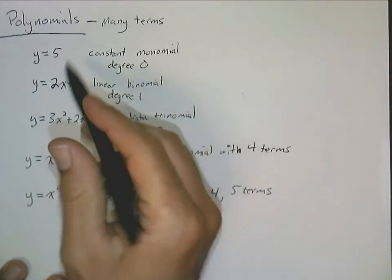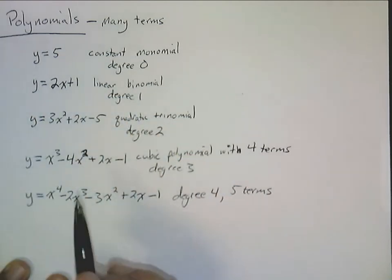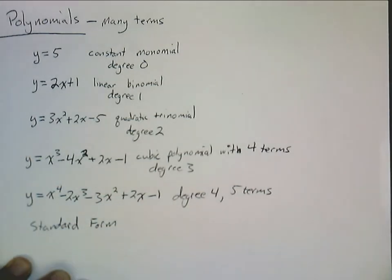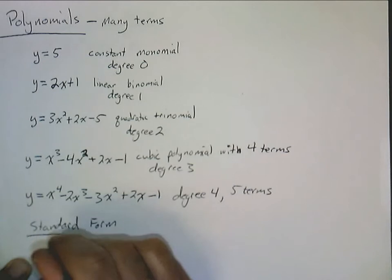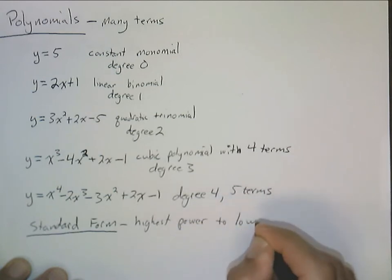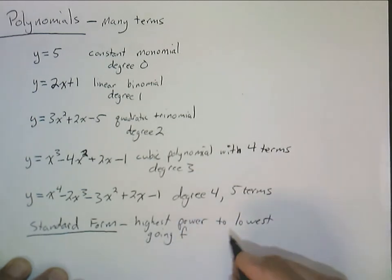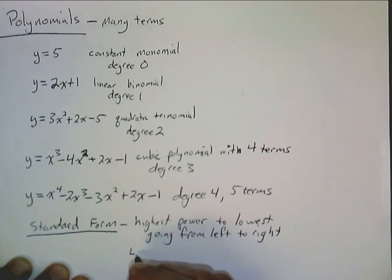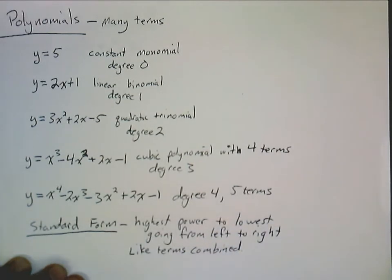Now, you'll also notice how we wrote these things. Basically, these are all in what's called standard form. And standard form for a polynomial, all that really means is that we're going from the highest power of x down to the lowest power of x from left to right. So it's the highest power of x going down to the lowest power of x going from left to right. Also, notice that we don't have any like terms to combine here. Standard form means that the like terms have been combined.